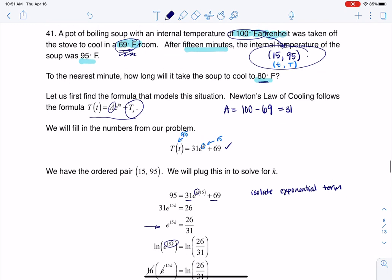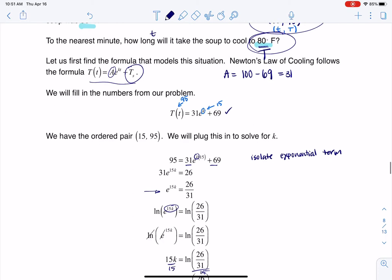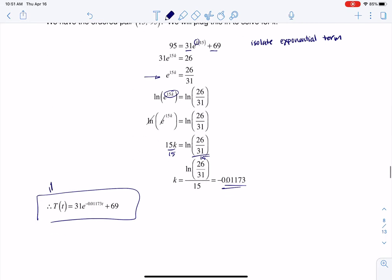Because if we go back, it actually said hey, how long does it take for this soup to get to 80 degrees? So if it's saying how long, I need to know the little t value, and they're giving me big T was 80.